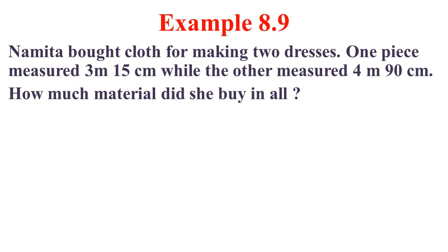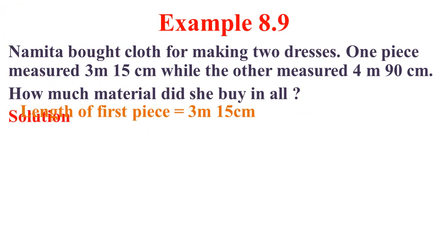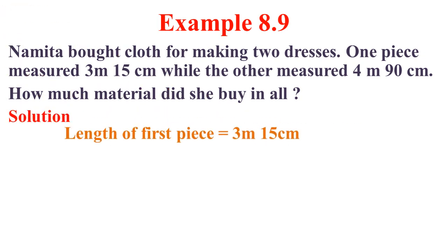Let us see one more word problem. Namita bought cloth for making two dresses. One piece measured 3 meter 15 centimeter, while the other measured 4 meter 90 centimeter. How much material did she buy in all? Now we are going to find the solution. The length of the first piece equals 3 meter 15 centimeter. Here it is given in two different units.